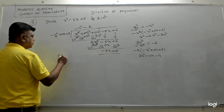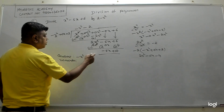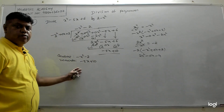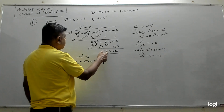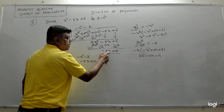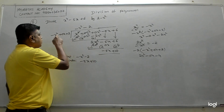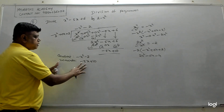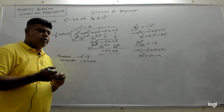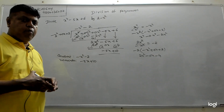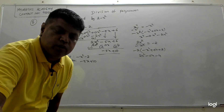The quotient is −x² − 2 and the remainder is −5x + 10. Here also the remainder is not zero — that's fine, remainder can be anything. We stop because the degree of the remainder (1) is less than the degree of the divisor (2). I hope you have understood how to divide two polynomials. Thank you for watching, see you in the next video.